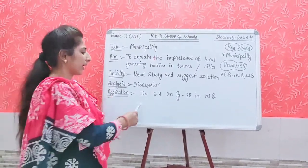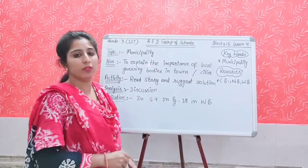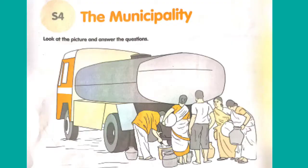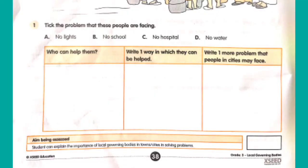Now let's apply your knowledge. You will do activity S4 on page number 38 in your workbook. The municipality — look at the picture and answer the questions. Here you can see a water tanker standing with some people taking water from it. Question 1: tick the problem that these people are facing — no lights, no school, no hospital, or no water. Who can help them? Fill in the table accordingly. Write one way in which they can be helped, and write one more problem that people in cities may face.